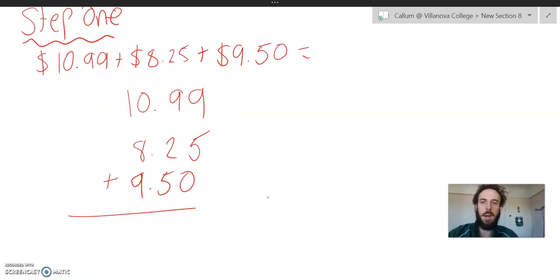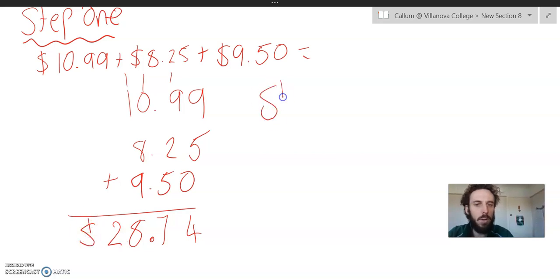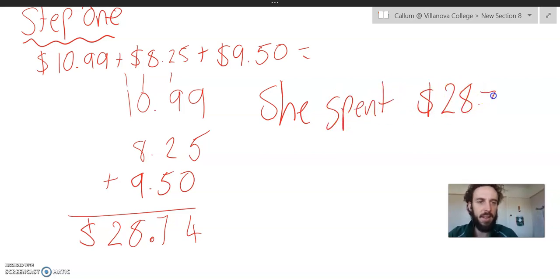And I'm going to put the addition sign to show that I know what I'm doing. Now, I'm doing $10.99 plus $8.25 plus $9.50. So I'm going to start with my ones as always. 9 and 5 is 14. Carry the 1. 9 and 2 is 11. And 5 is 16. And the 1 up the top is 17. Carry the 1. I can place my decimal down here now. 9 plus 8 is 17, plus 1 is 18. Carry the 1. 1 plus 1 is 2. So I know in total, she spent $28.74.